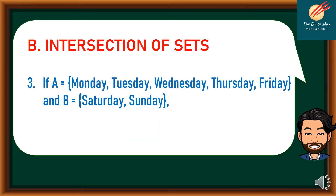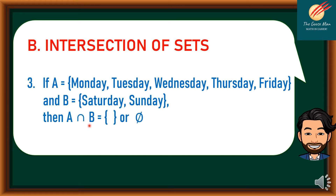Third example: if A is equal to {Monday, Tuesday, Wednesday, Thursday, Friday}, while B is composed of {Saturday and Sunday}. Do we have any common elements? The answer is actually none. So A intersection B is equal to the null set — we can use this symbol or the other symbol.